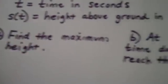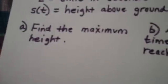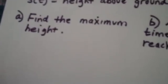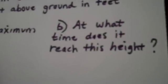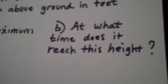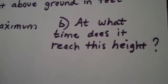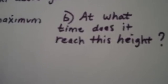Part A wants to know the maximum height reached by this object, golf ball, rocket, whatever it is. Part B wants to know at what time it reaches this height.